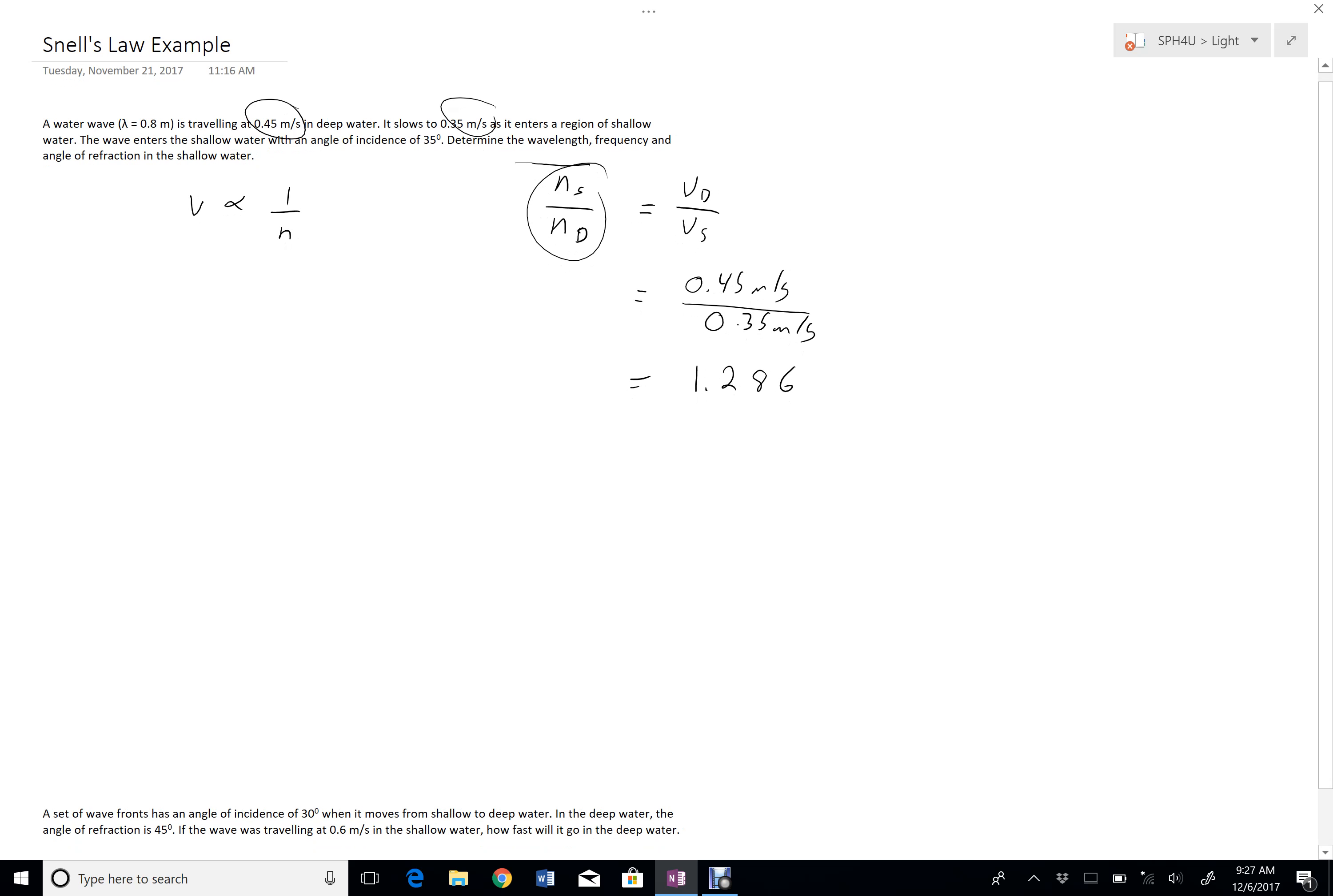So now using that, I can come up with all the other things. So let's start with wavelength. First of all, the wavelength, again, is inversely proportional to refractive index. So I have the wavelength in deep water to be 0.8 meters. So I want the wavelength in shallow water. So I'm going to go wavelength in shallow divided by wavelength in deep. And again, this is an inverse relationship, so that means that I should have Nd over Ns over here. Now that's the inverse of this, right?